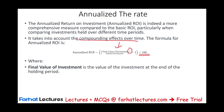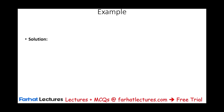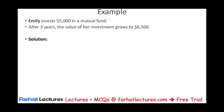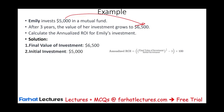In the formula, the final value is what you received at the end — in our example, $125,000. The initial investment is what you put in — $100,000. And n is the number of years the investment was held. Let's look at an example: Emily invests $5,000 in a mutual fund and three years later cashes out $6,500. What is her annualized ROI?